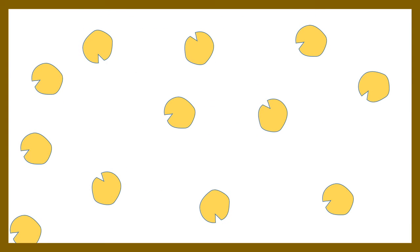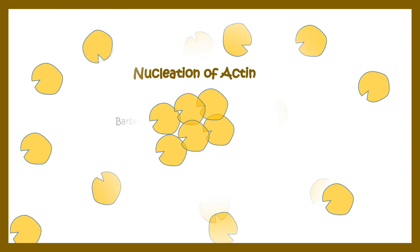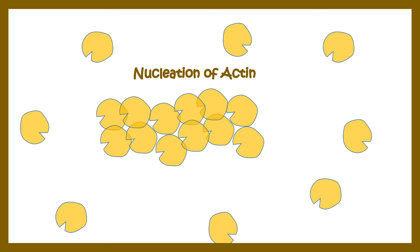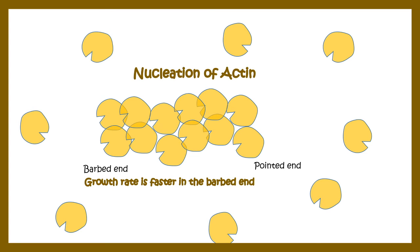Globular actin has specific structural features: it has a barbed end and a pointed end. Nucleation of actin is a spontaneous process where a few actin monomers assemble together to form a nucleus, on top of which subunits can be assembled. One end is the barbed end and the other is the pointed end. The rate of addition is much greater at the barbed end compared to the pointed end.